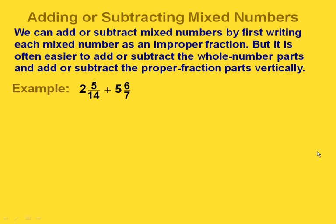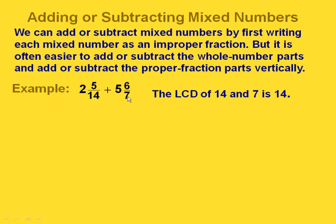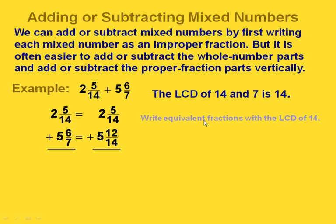Now if we're adding or subtracting mixed numbers, we can do this two different ways. We can convert each mixed number to an improper fraction and then do the addition or subtraction. But another way is to add or subtract the whole number parts and then deal with the proper fraction parts. We can write this in a vertical form. The first thing we want to do is find the LCD of our two fractional parts. Since we have 14 and 7 as our two denominators, the LCD would be 14. We would write equivalent fractions with an LCD of 14.